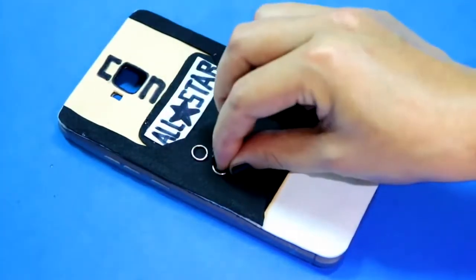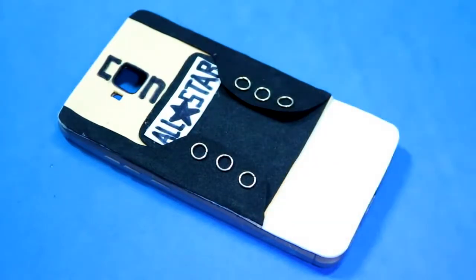To mimic those rings to pass the shoelace through, I'm using these jump rings. Once you have glued all of them on, you get this!